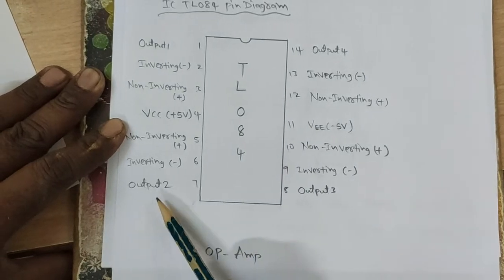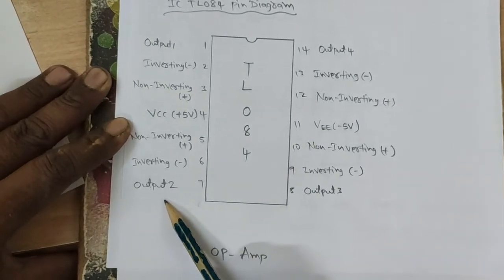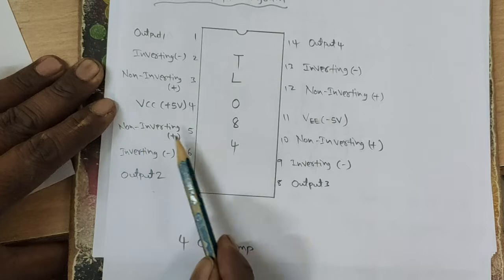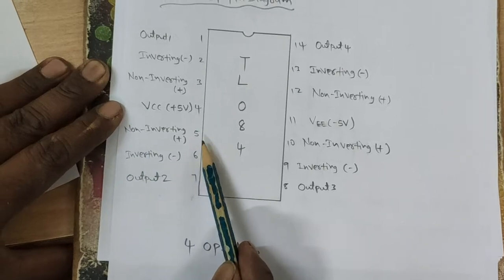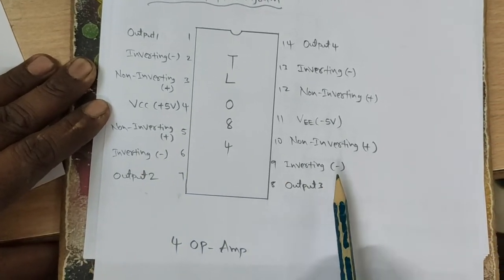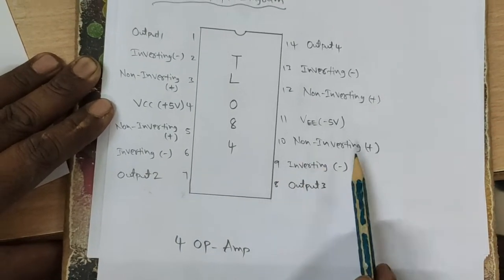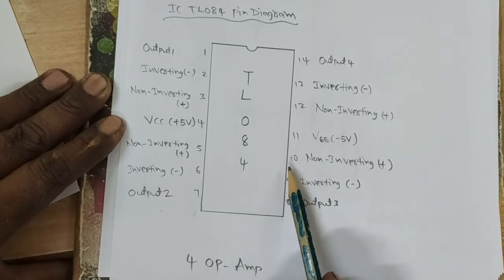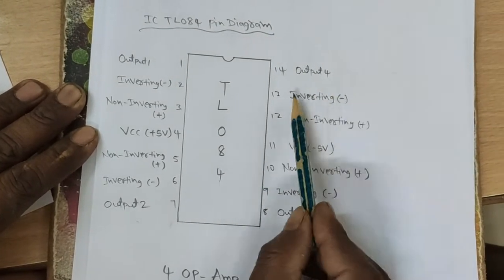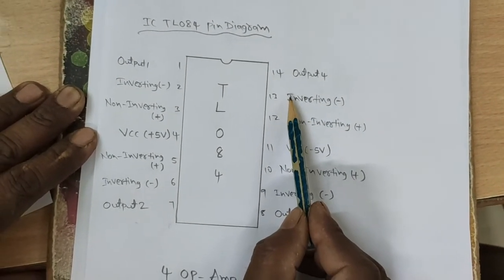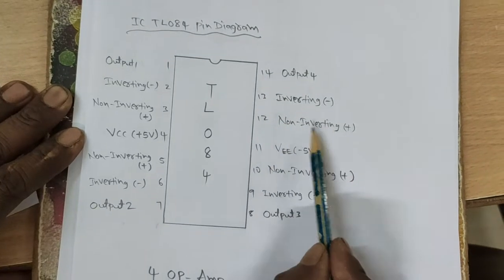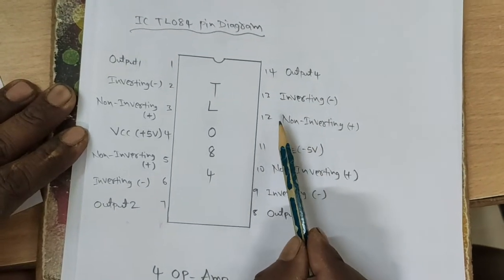Output 2 is the second op-amp output. Its inverting input is pin 6 and non-inverting input is pin 5. Output 3: inverting input is pin 9 and non-inverting input is pin 10. Output 4: inverting input is pin 13 and non-inverting input is pin 12.